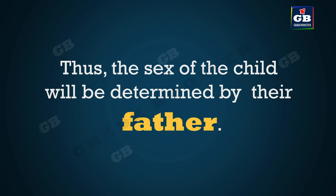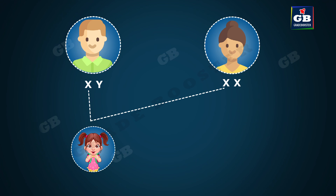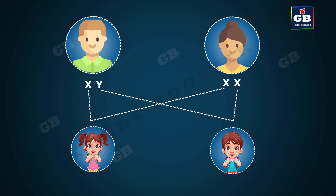Thus, the sex of the children will be determined by what they inherit from their father. A child who inherits an X chromosome from the father will be a girl, and one who inherits a Y chromosome from him will be a boy.